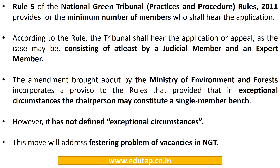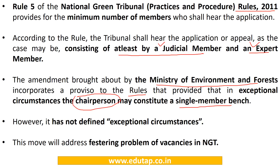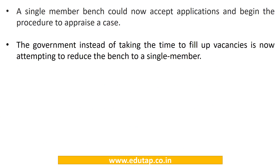What's in the news about NGT? As explained earlier, each bench of NGT should consist of a minimum of two members, i.e., one judicial member and one expert member. The Ministry of Environment and Forest amended Rule 5 of the National Green Tribunal Rules 2011, stating that the chairperson may constitute a single-member bench in exceptional circumstances. This has been done to address the festering problem of vacancies in NGT. However, it has not defined what exactly exceptional circumstances are. Now a single-member bench can accept applications and begin the procedure to appraise a case. Efforts should be made by the government to fill up the vacancies rather than reduce the bench to a single member.